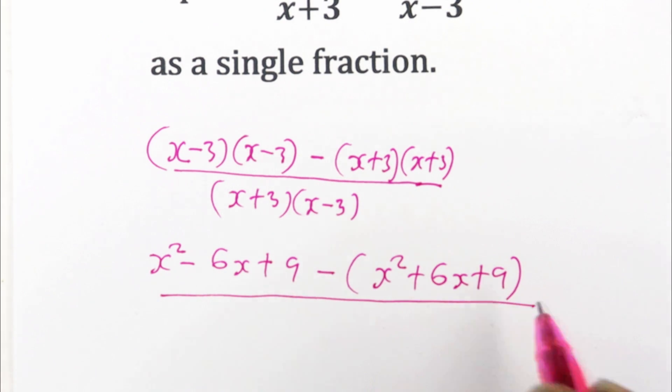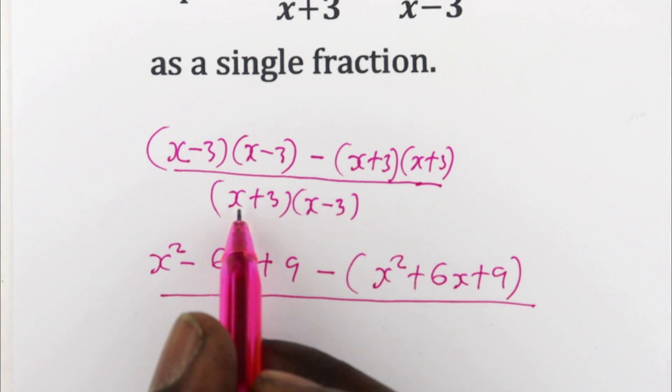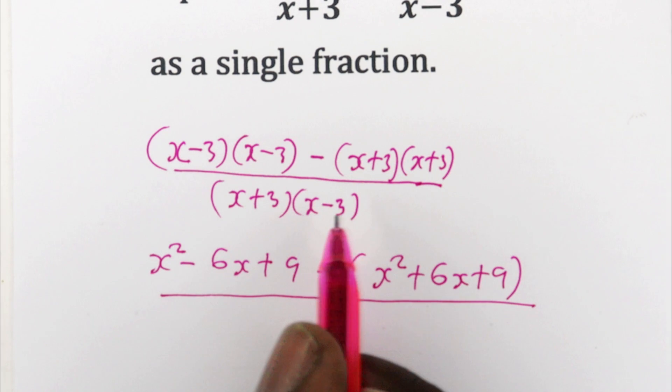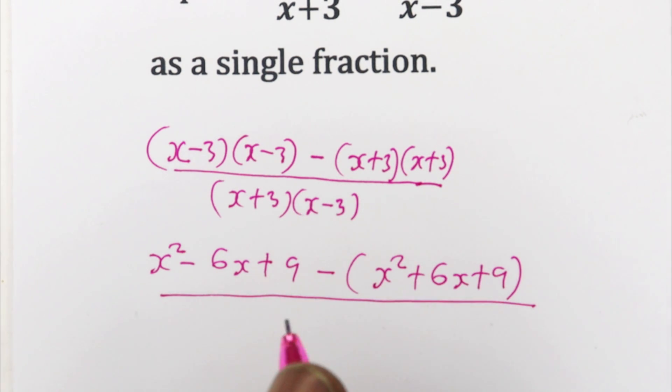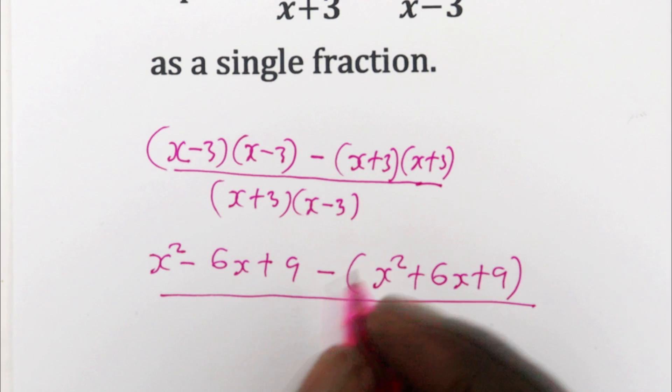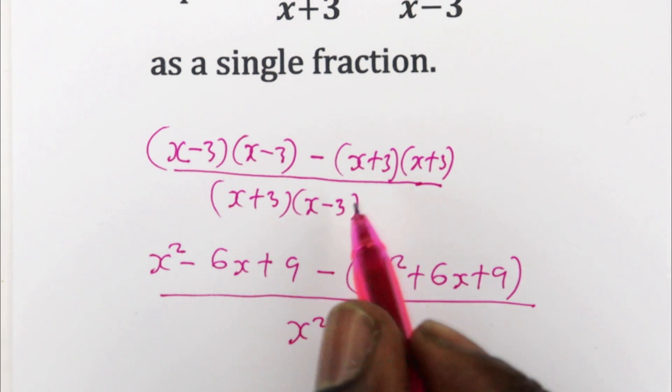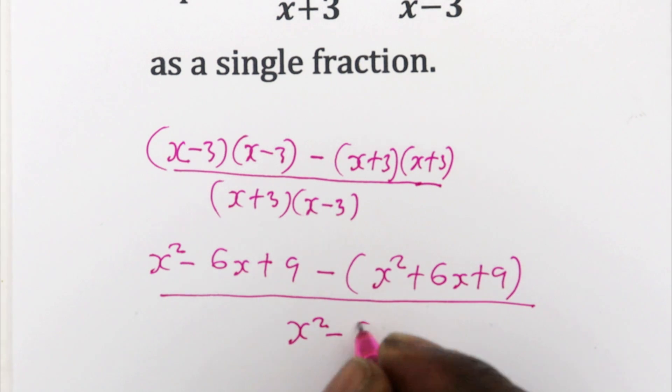And remember that all of this is over (x + 3)(x - 3), which you can also use the quadratic identities. This is just the same as a difference of squares, so it is x² - 3², that is x² - 9.